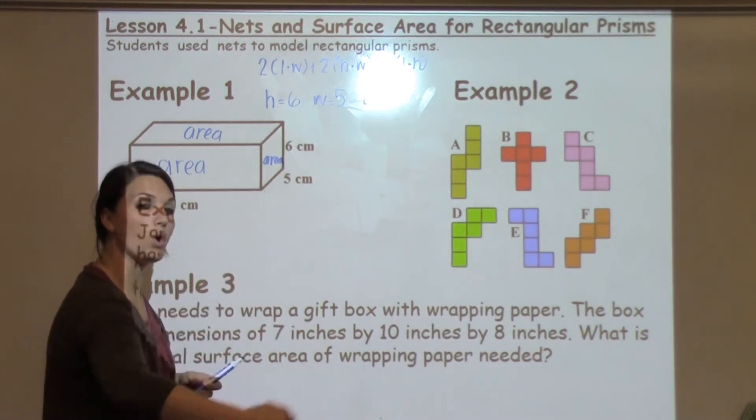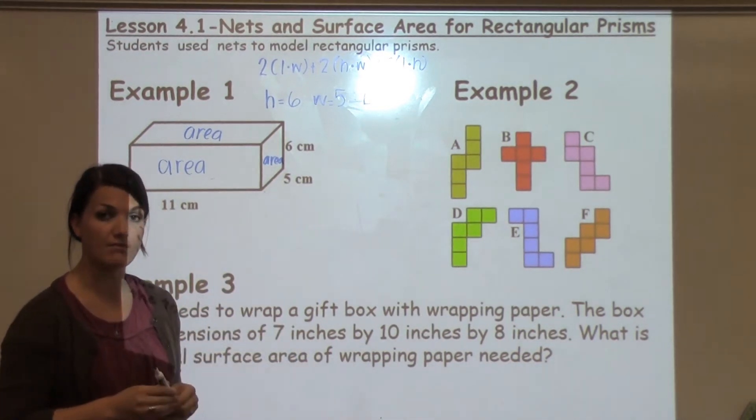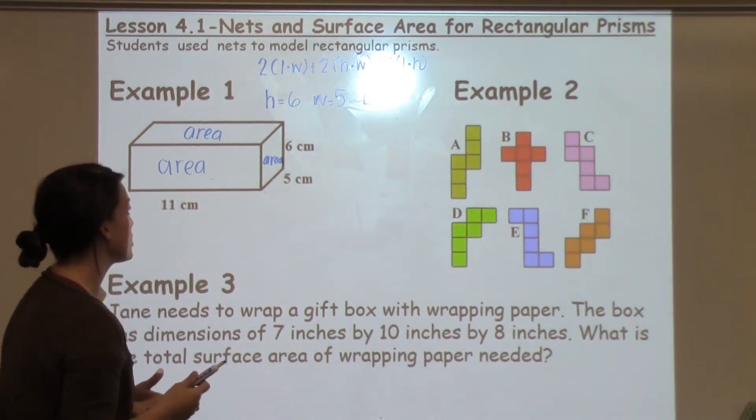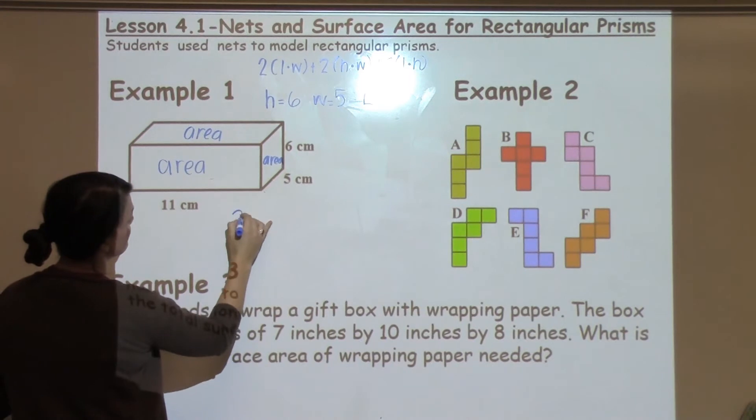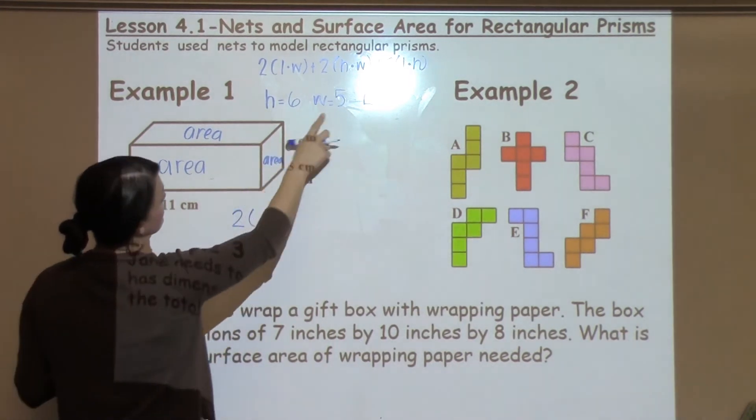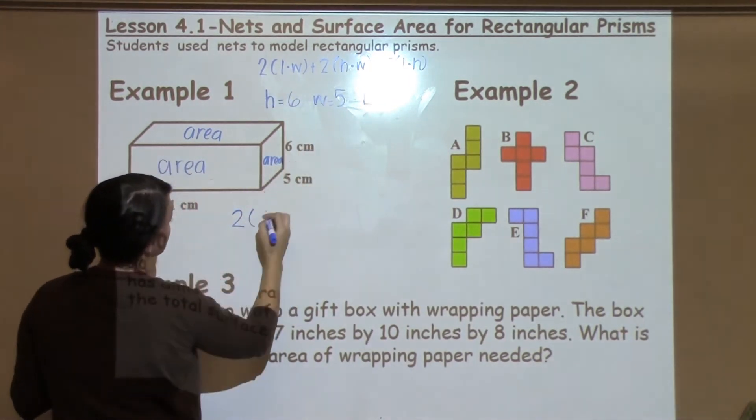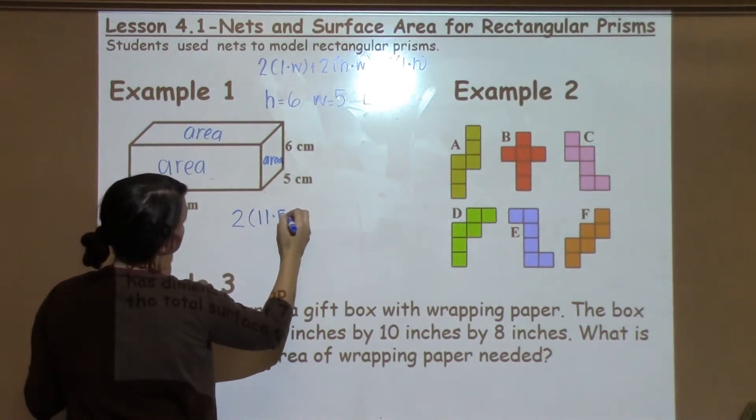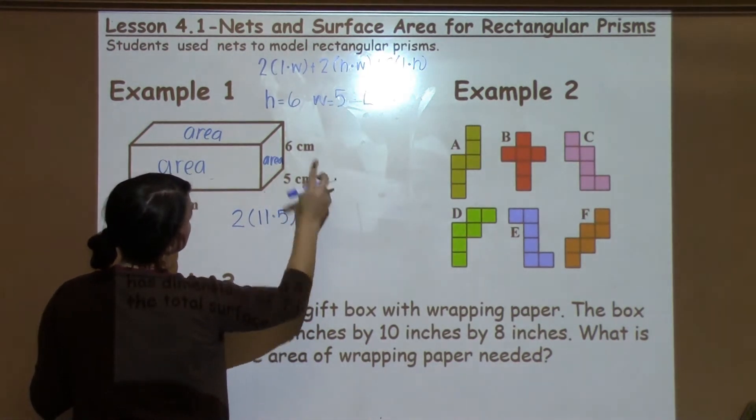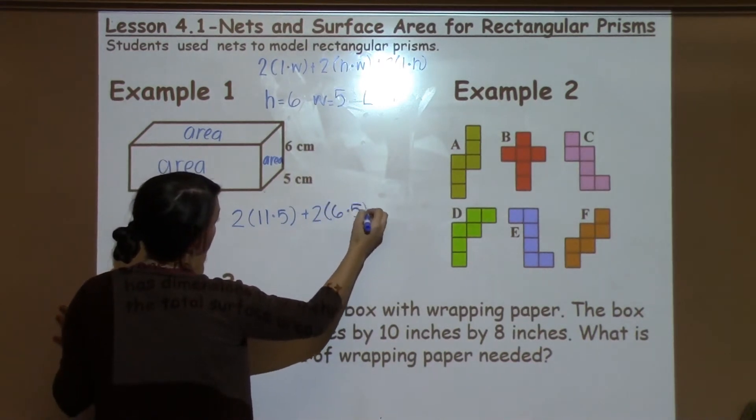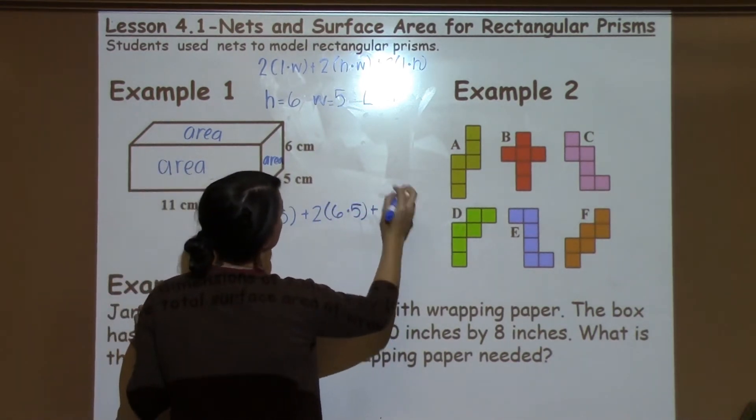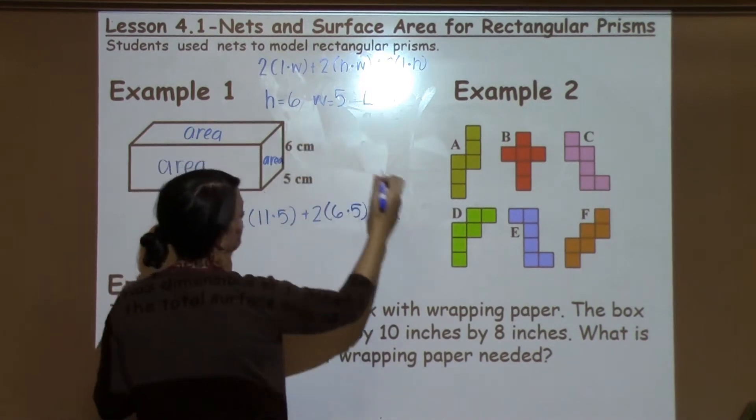Think about how much would the whole shape need to have covered, that's how we find surface area and what we're looking for. So I'm going to go ahead and plug these numbers into the formula. 2 length times width would be 11 times 5, plus 2 height times width would be 6 times 5, plus 2 length times height would be 11 times 6.